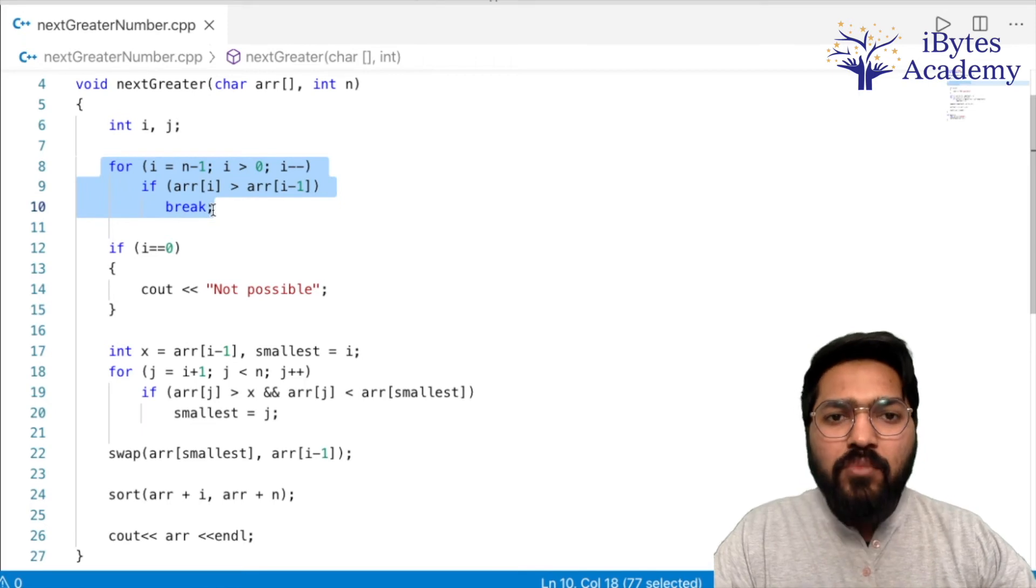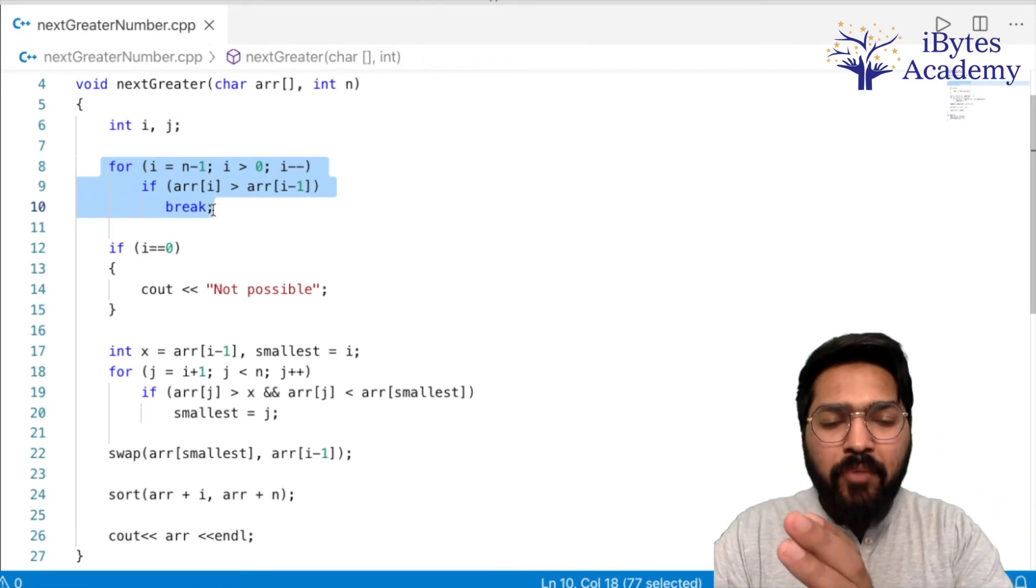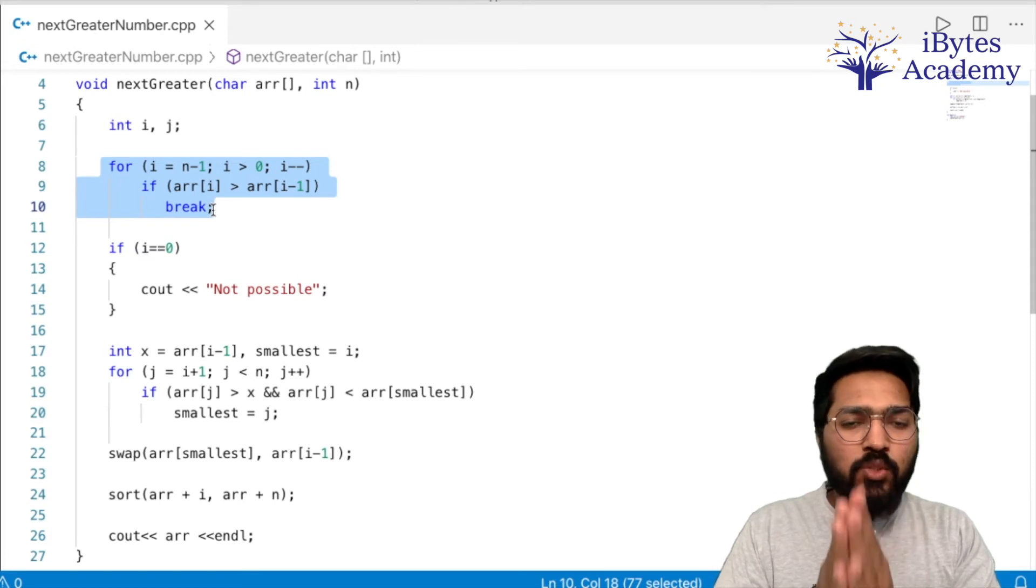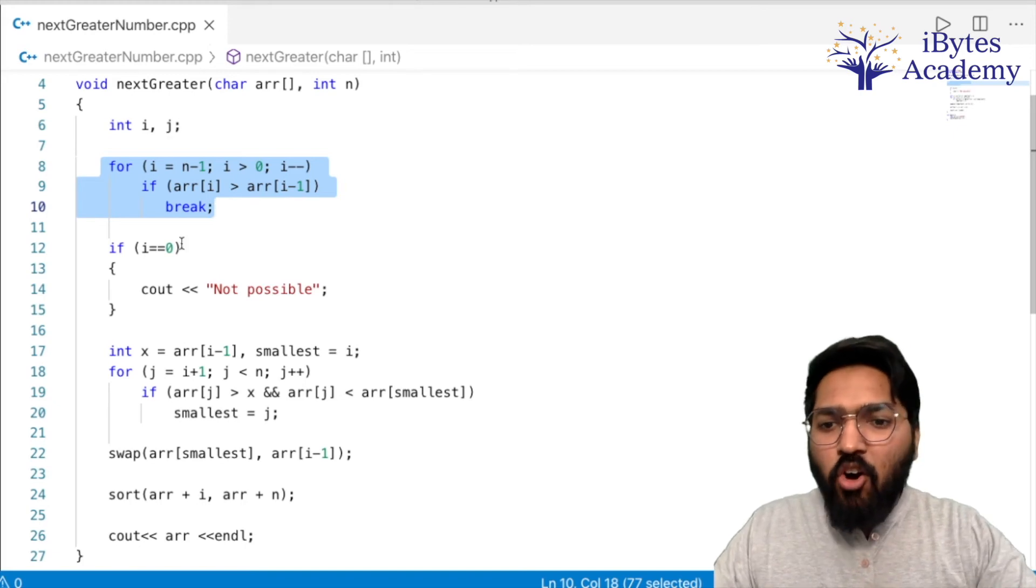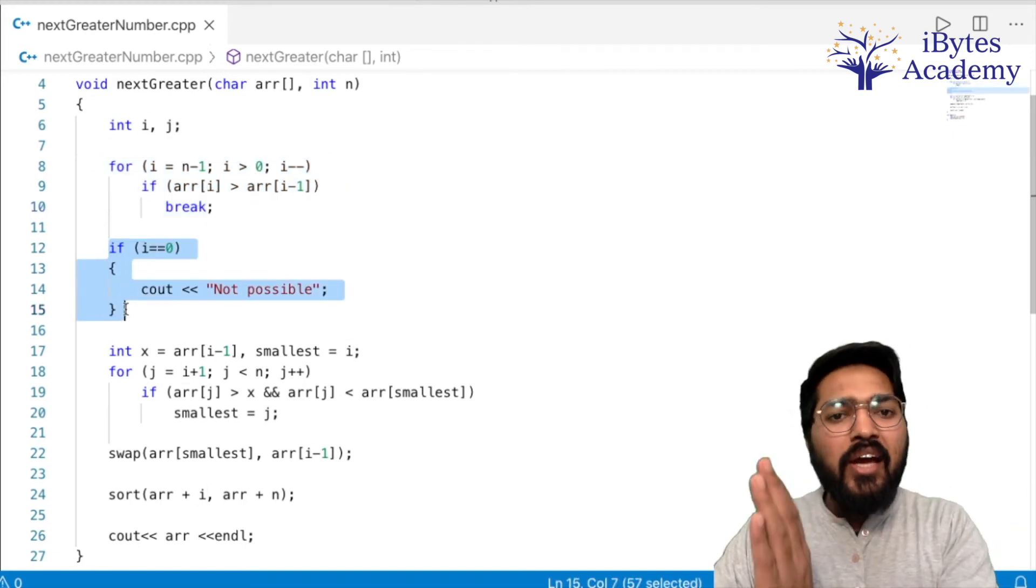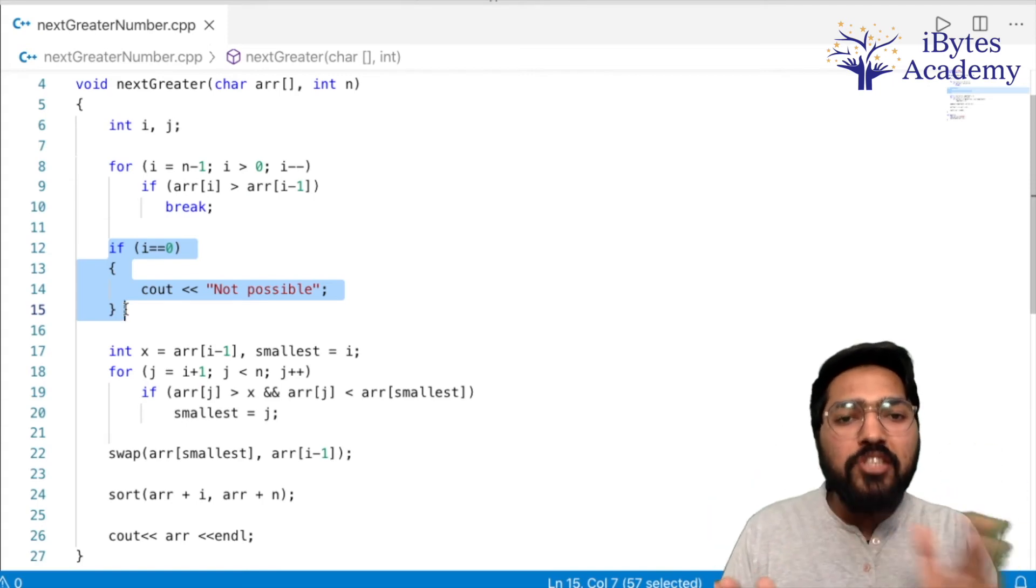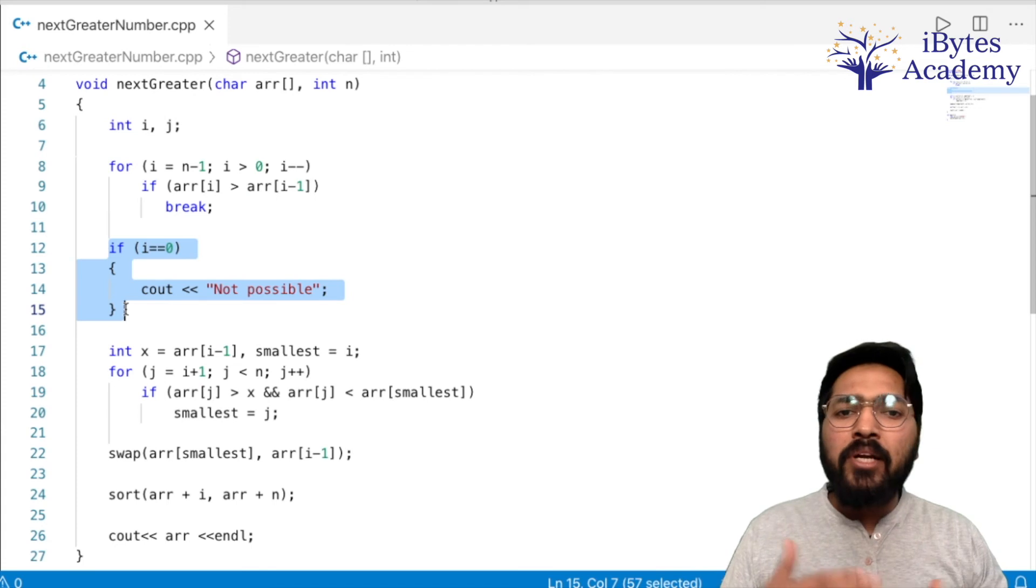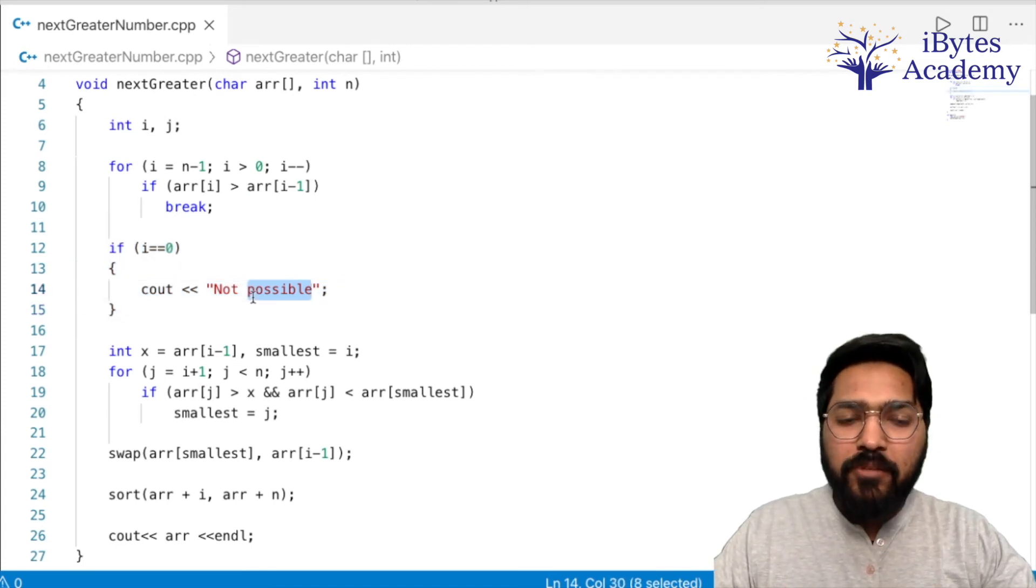First we will take a loop starting from the back and compare i and i minus one. As soon as we find an element at i minus one which is smaller than the element at i, we will stop there. And we will add a check: if i equals zero, then that means the whole array is already reverse sorted, meaning there cannot be a larger element possible, so we will print 'not possible'.